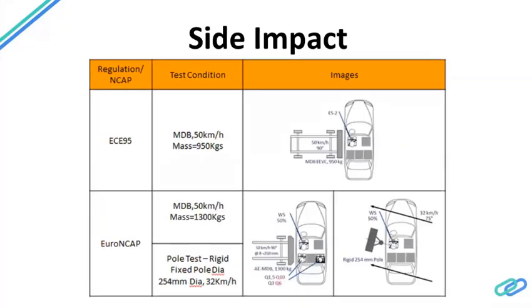For side crash, ECE R95 is a European requirement. In this test, the car is stationary and a movable deformable barrier (MDB) hits it. The MDB mass is 950 kg — mass is critical because kinetic energy equals ½mv², so mass directly influences the crash severity. The test velocity is 50 km/h, and the dummy used is the ES-2 (Euro SID 2), which is specific to side crash requirements.